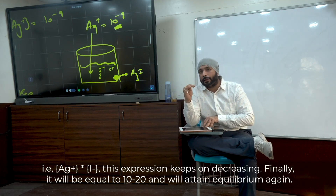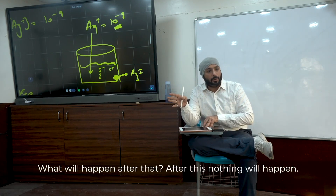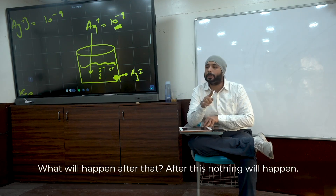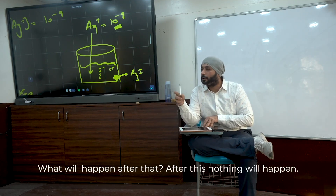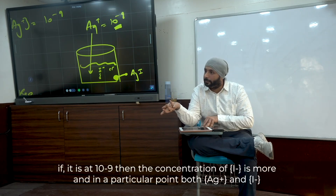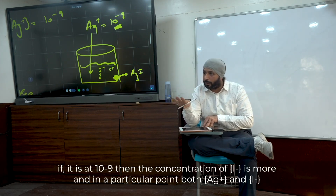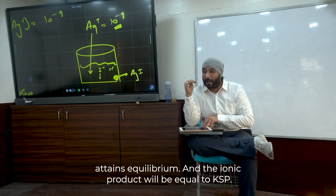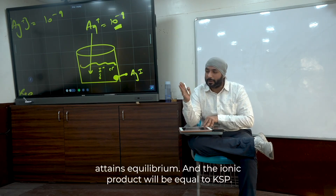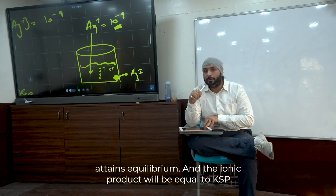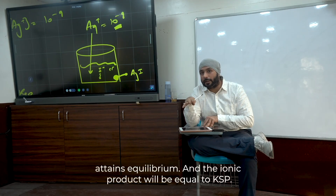Finally, when Ag⁺ concentration reaches 10⁻²⁰... it is at equilibrium twice. After that it's a different situation. If Ag⁺ concentration reaches 10⁻⁹, then I⁻ is fully precipitated. At that particular point, the ionic product of AgCl equals Ksp(AgCl), which means AgCl also starts to precipitate. The ionic product equals Ksp.